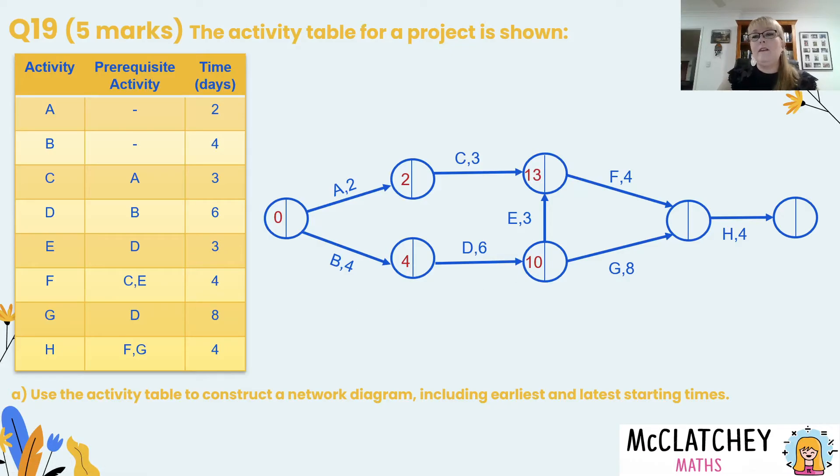So that means we're going to add the largest one through, that'll become 13 in that vertex. Now we can keep moving forward in the network. We've got another choice again. Do I add 10 plus 8 which would be 18 or 13 plus 4 which is 17? As I said before we need to put the largest one in there then we can finish the project on 22 days. So we forward scan, these are our earliest start times.